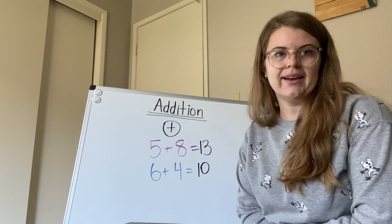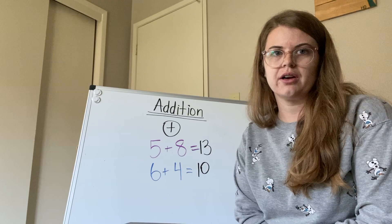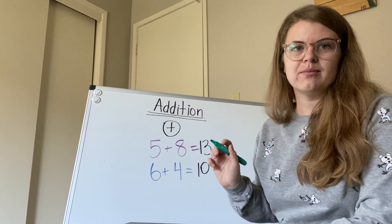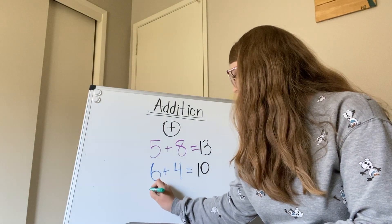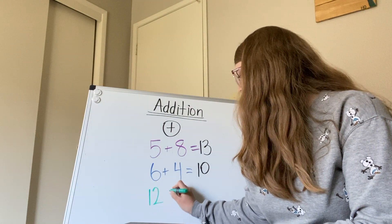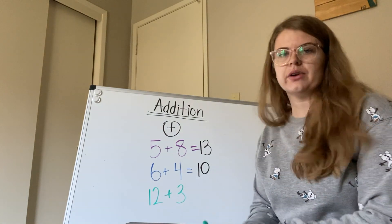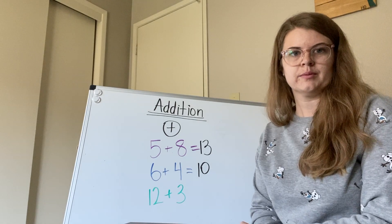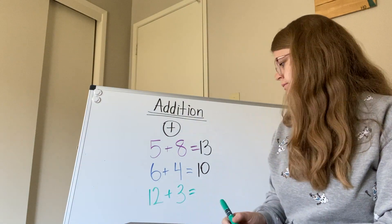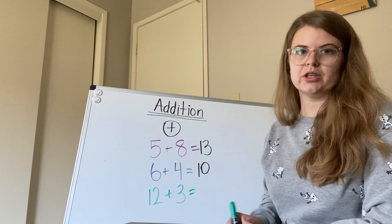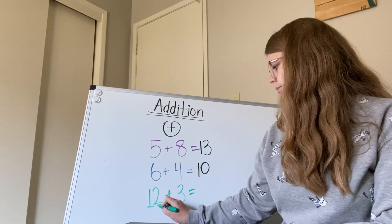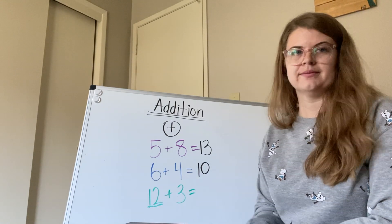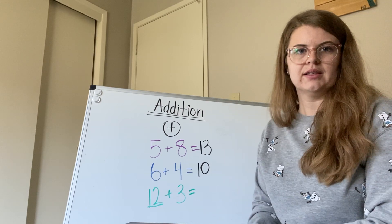We're going to practice two more together. And then it's going to be your job to practice on your own. Why don't we try one that's a little bit more challenging. We're going to try 12 plus three, 12 plus three gets a little bit more challenging because it is a double digit number.